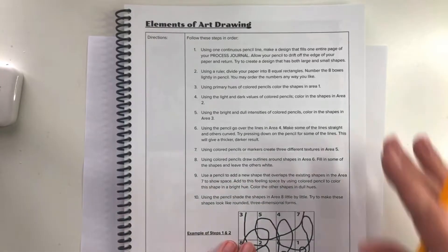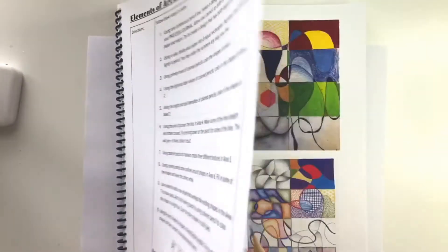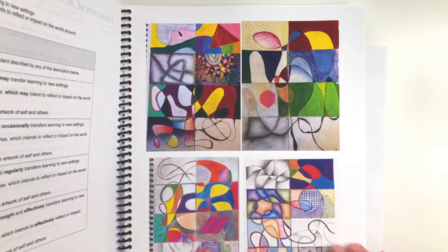We're looking at the assignment, the elements of art drawing. There are a series of steps you are going to need to take. You can see on page 65 there are some examples, but right now we're going to turn to page 67. When I do this, I like to slide an extra piece of paper under my sketchbook so that I am not seeing anything on the other side.